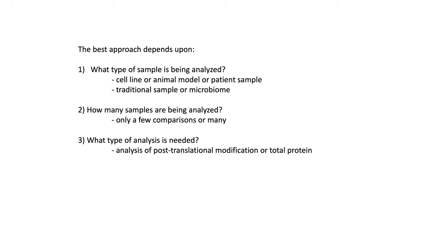Each of these methods has different advantages and disadvantages, just like DDA versus DIA, and the way to proceed often depends upon several questions about sample and method development. First, what type of sample are you analyzing — a cell line, an animal model, or a patient sample? Cell lines are readily amenable to the SILAC method; SILAC-labeled chow is available for animal models, although it's quite expensive, and patient samples really cannot be done by a SILAC method, so in that case either label-free or TMT/iTRAQ-type methods are best. Additionally, microbiome samples — where one is looking at microbes in host environments — are often done using DIA methods because the identification of different microbes can be processed over time, and the data can go back and be re-searched as different microbes of interest come up.